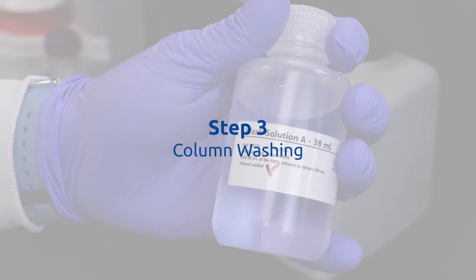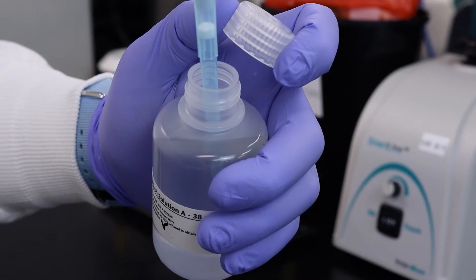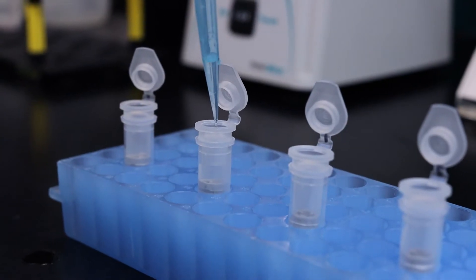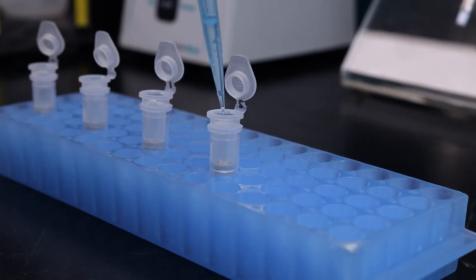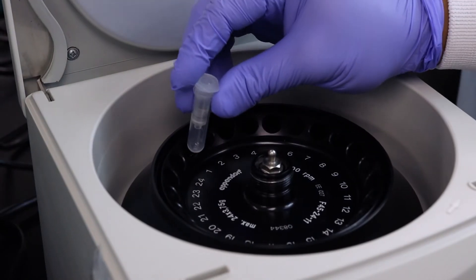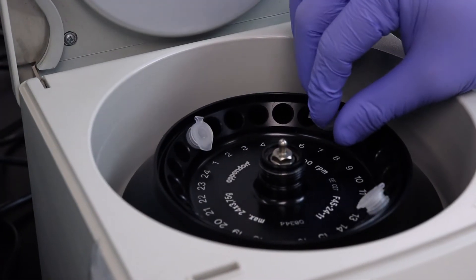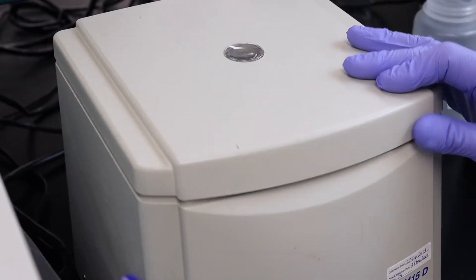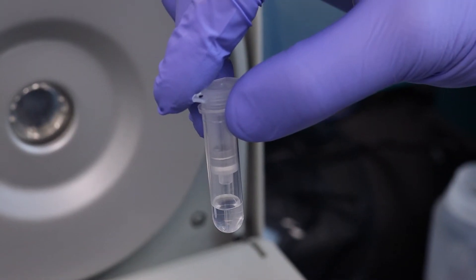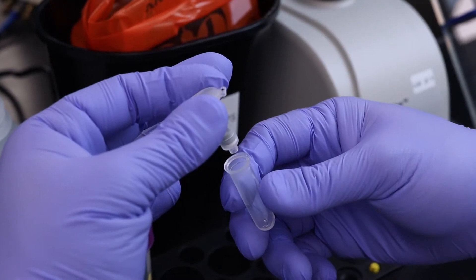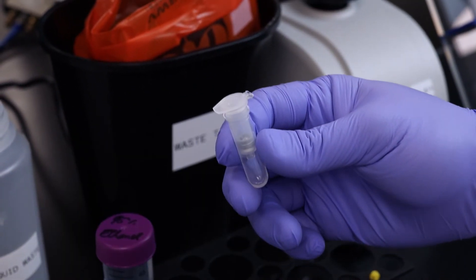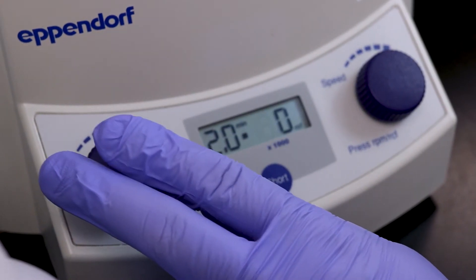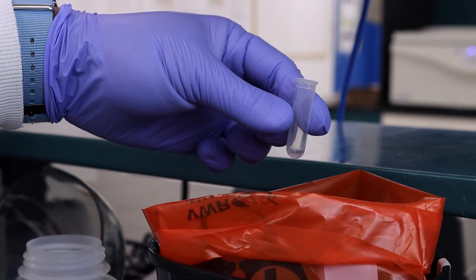Step 3. Column Washing. Apply 400 microliters of wash solution A to the column and centrifuge for 1 minute. Discard the flow-through. Repeat the step 2 more times for a total of 3 washes. Spin the column for 2 minutes to thoroughly dry the resin. Discard the collection tube.